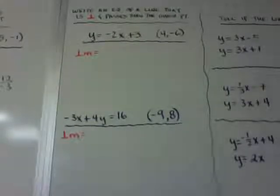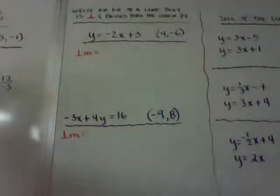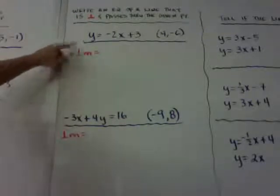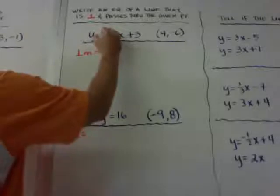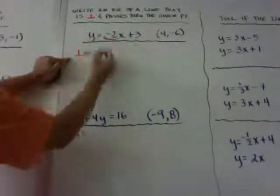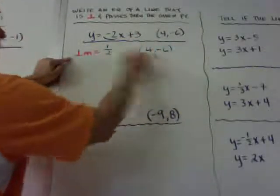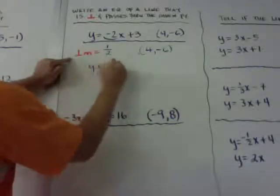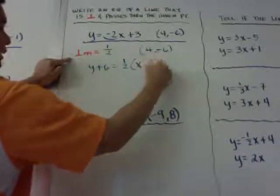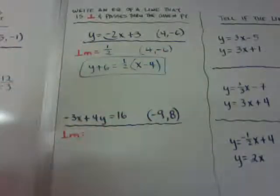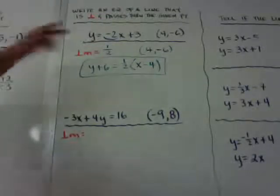The next one: write an equation of a line that is perpendicular and passes through the point. It's the exact same thing, except instead of a parallel slope, I'm going for a perpendicular slope. If this is negative 2, my perpendicular slope is the opposite reciprocal, which is positive 1 half. Using the same point, negative 4 and negative 6, I write point-slope: y plus 6 equals 1 half times the quantity x minus 4. And I'm done — it'll be pretty fast when they give it to you in slope-intercept form.